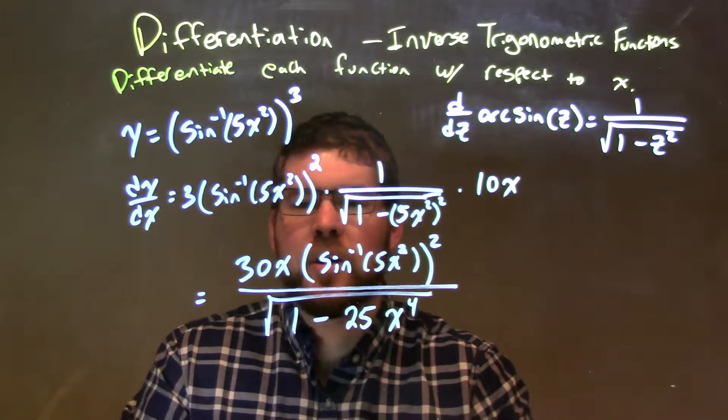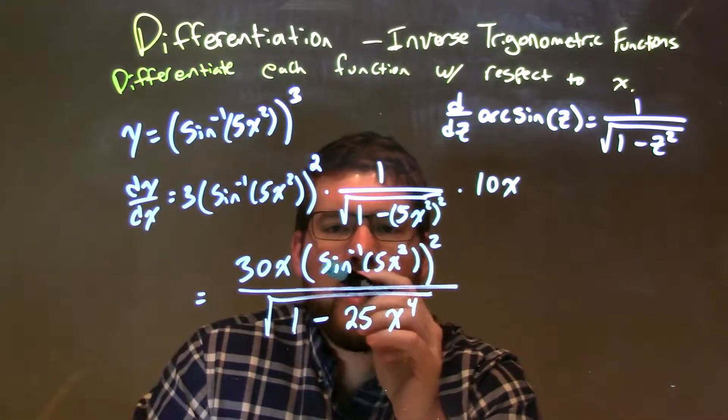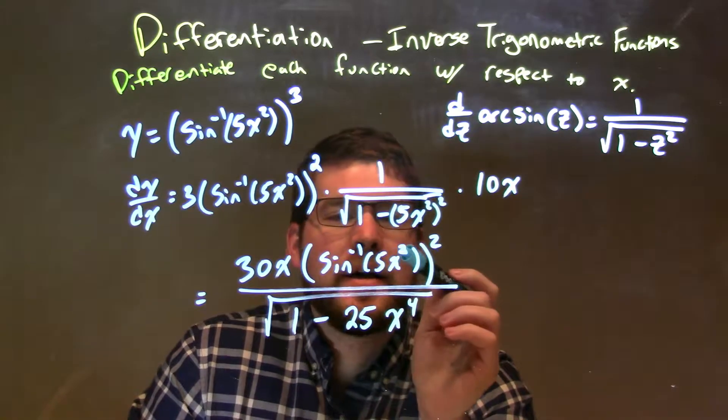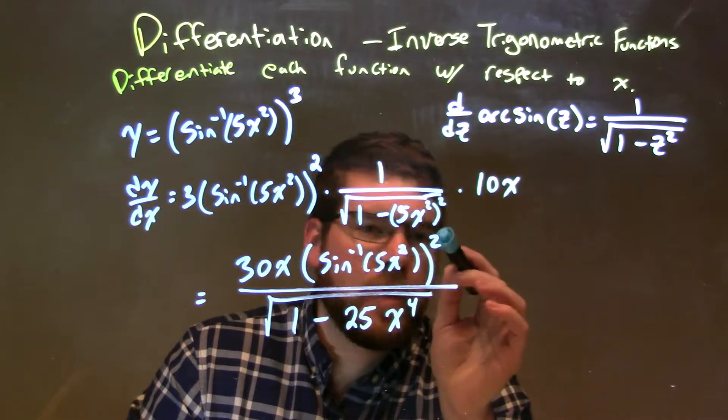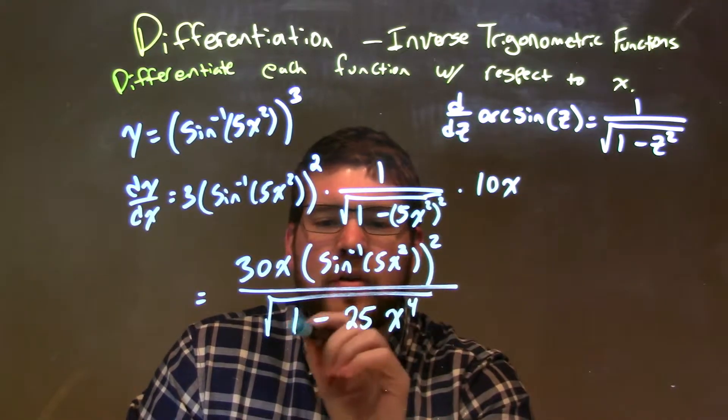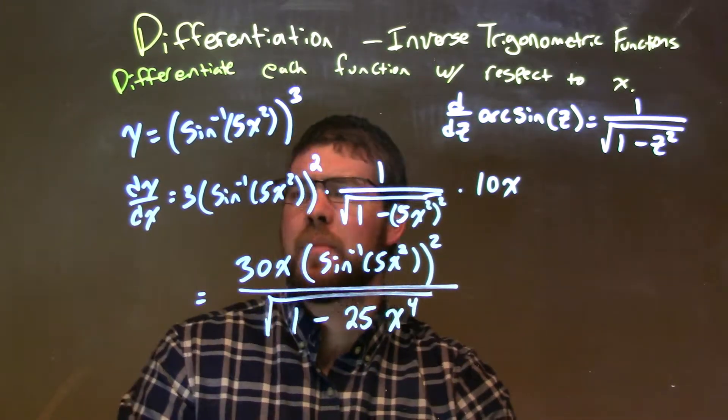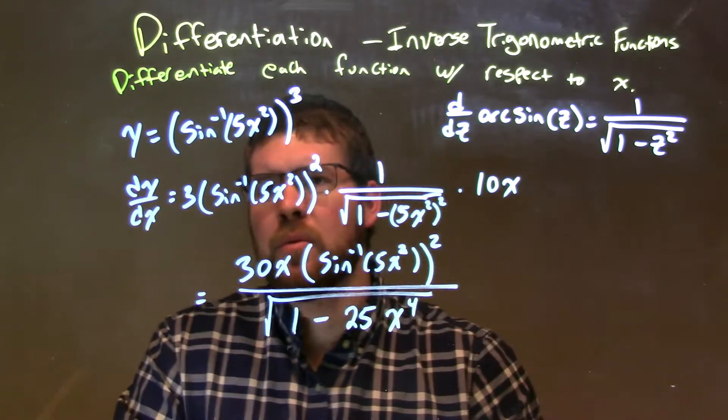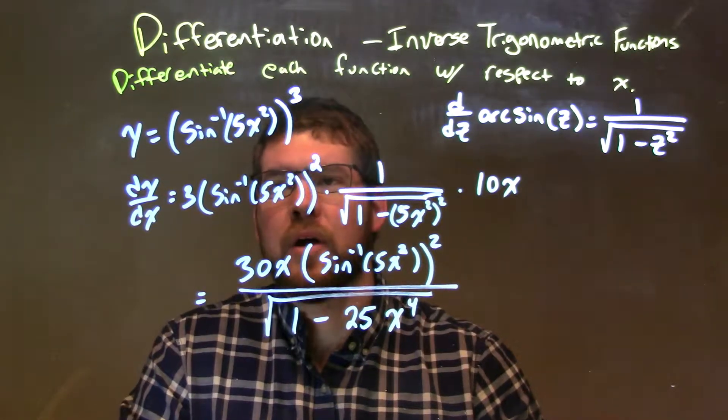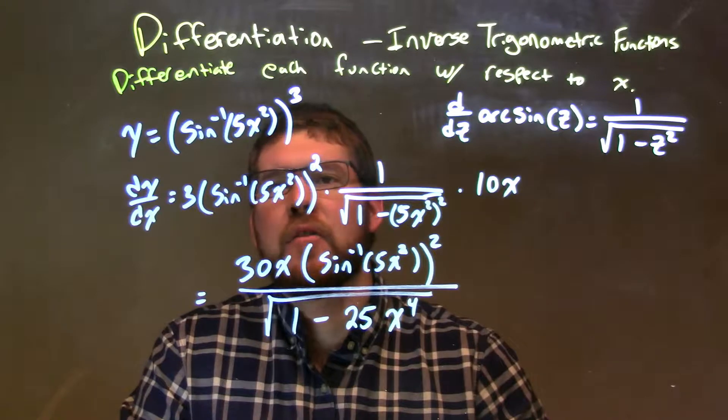Our final answer here is 30x times arc sine of 5x squared, all that squared, over the square root of 1 minus 25x to the fourth power. So let's recap here. We're given y equals the third power of arc sine of 5x squared.